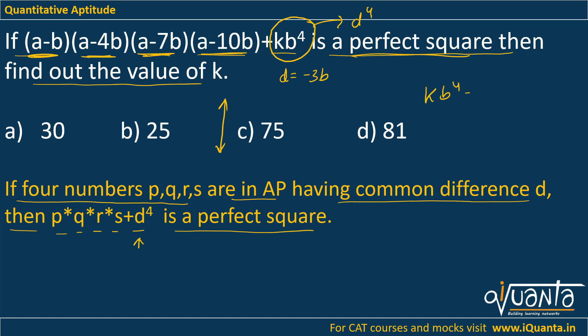So kb^4 is nothing but d^4. We already know the value of d, which is -3b. So (-3b)^4 is 81b^4. We will get k equals to 81. Option D will be the correct answer.